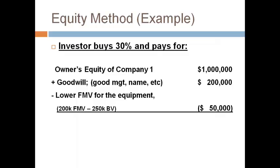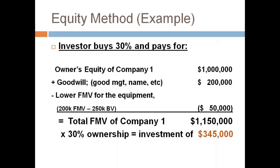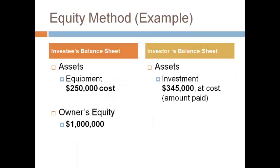Given the fair market value of the total company is $1,150,000, the investor is willing to pay $345,000 to purchase 30% ownership. Remember, the purpose of the equity method is to report the investment on the investor's balance sheet at the percent ownership multiplied by the investee's owner's equity. At the time of purchase, the investment of $345,000 does not equal $1,000,000 times 30% due to the difference in fair market value and book value of the equipment and the goodwill.